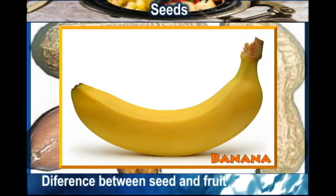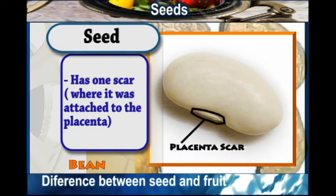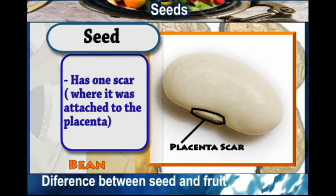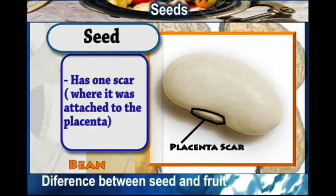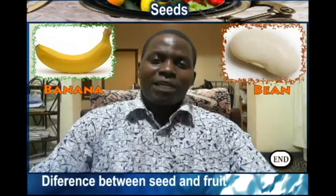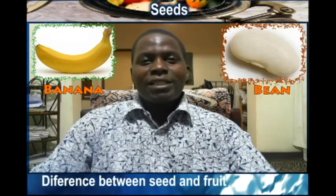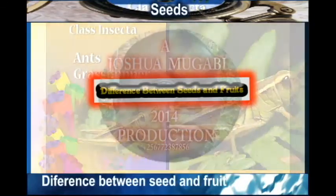So the difference between the fruit and the seed is that the fruit usually has two scars and the seed has only one scar. We have discussed the different types of fruits, the parts of the seed, and the difference between the seed and the fruit. I think all of us can now differentiate between the seed and the fruit. Thank you for being with us.